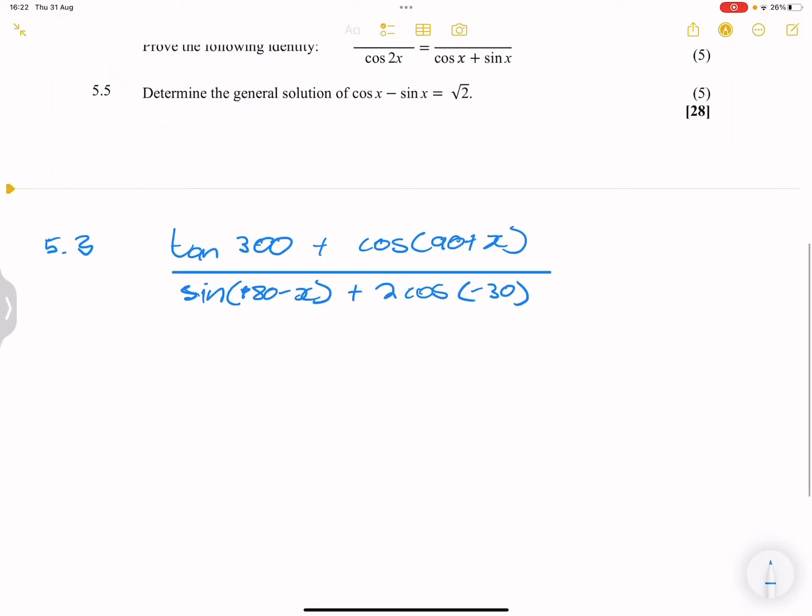And of course, we're going to use a CAST diagram as well as special angles. Now let's start. In this case, how do we express tan 300? Now remember, two things are supposed to happen: either we're going to express the angle as a special angle or we have to find angles that are common. In this case, tan 300 easily becomes tan(360 - 60). Why? Because 60 is a special angle.